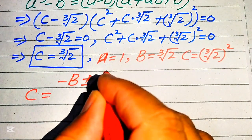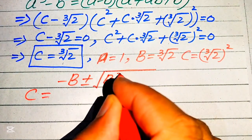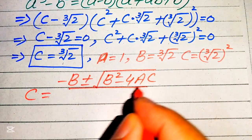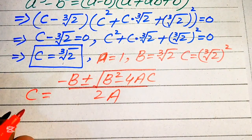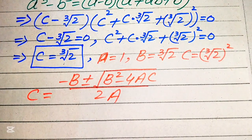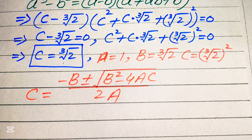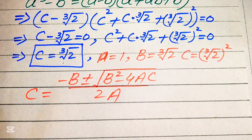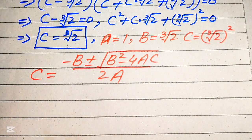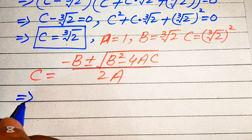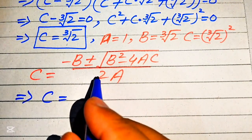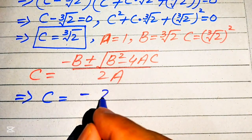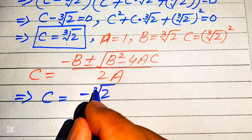The quadratic formula is c equals negative B plus or minus square root of (B squared minus 4AC), divided by 2A. We now substitute the values of A, B, and C. The value of B is cube root of 2, so the numerator becomes negative cube root of 2 plus or minus square root of (cube root of 2) squared minus 4 times 1 times (cube root of 2) squared.